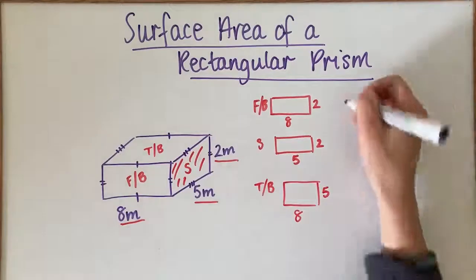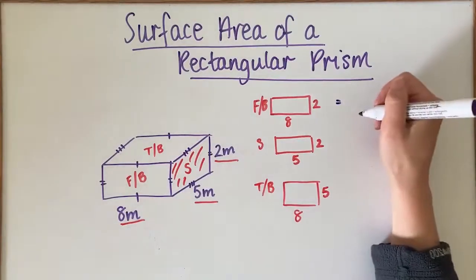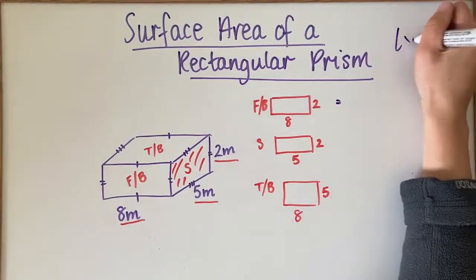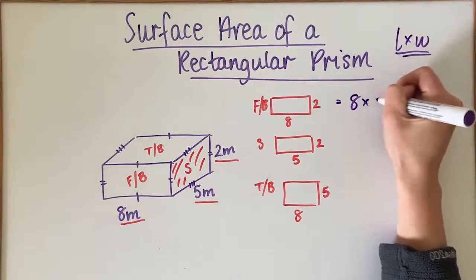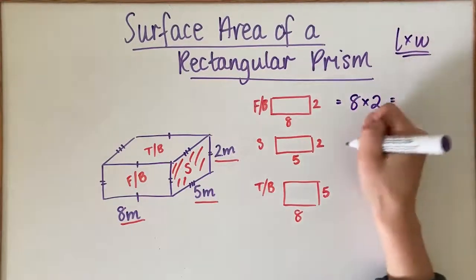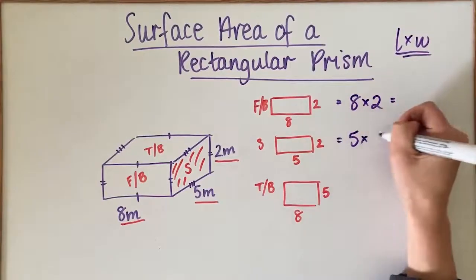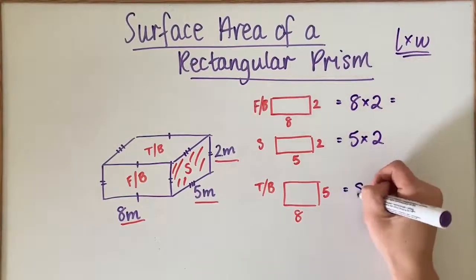So I'm going to find the area of each one of these, because they're all rectangles. The formula that I'm going to use for all of them is length times width. So this is going to be 8 times 2, this is going to be 5 times 2, and this is going to be 8 times 5.